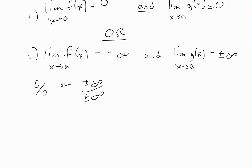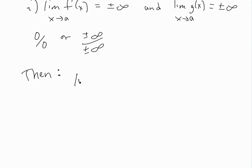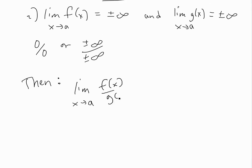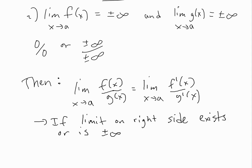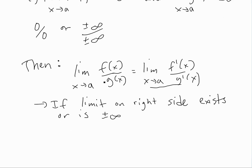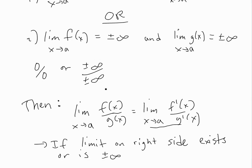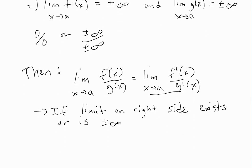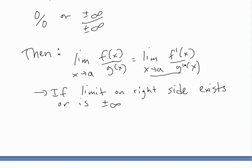Then what L'Hôpital's Rule states is: the limit as x approaches a of f(x) divided by g(x) is just equal to the limit as x approaches a of f'(x) divided by g'(x). That's basically if this limit exists or is plus or minus infinity; otherwise you might have to apply a second derivative. So the limit of a function divided by another function, when it's 0 over 0 or infinity over infinity, equals the limit of their respective derivatives.